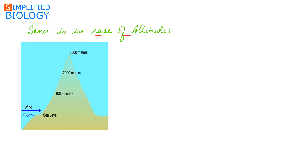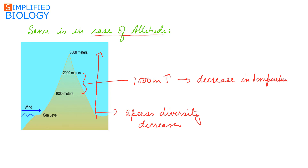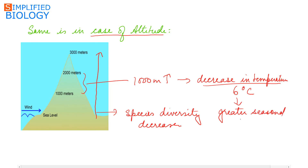As we move from lower altitude to higher altitude, species diversity decreases. It has been seen that for every 1,000 meter increase in altitude there is a decrease in temperature by about 6 degrees Celsius. This decrease in temperature and greater seasonal variability at higher altitudes are the major factors for the decrease in species diversity at higher altitudes.